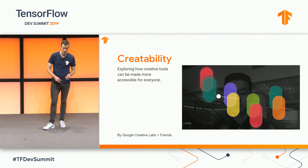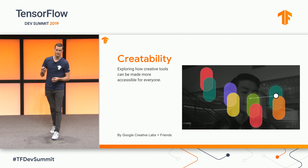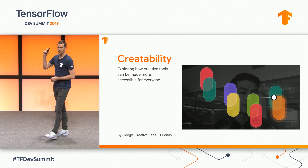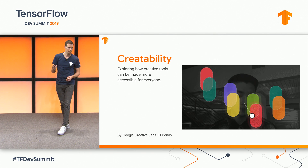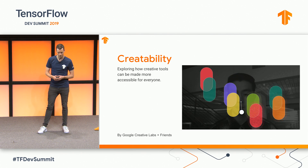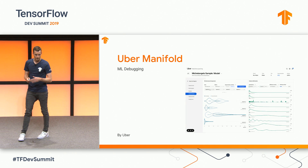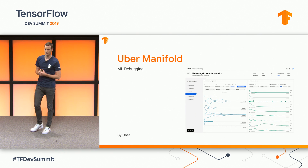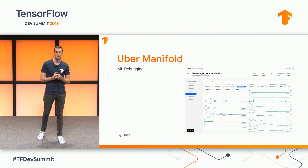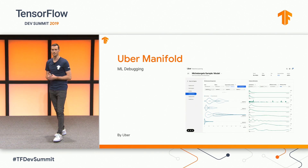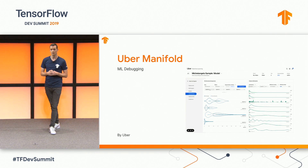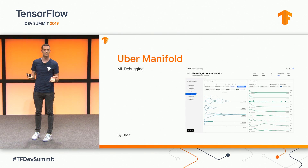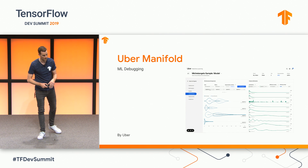Our friends at Google Creative Labs have built a series of experiments to explore how creative tools can be more accessible for everyone. There's a great lightning talk on this tomorrow. Uber has built an in-browser tool for model-agnostic visualization of ML performance. They use TensorFlow.js for acceleration of their linear algebra — K-means clustering, KL divergence computations, and so on. They're also giving a great lightning talk about how they use TensorFlow.js. Again, this is all in-browser.